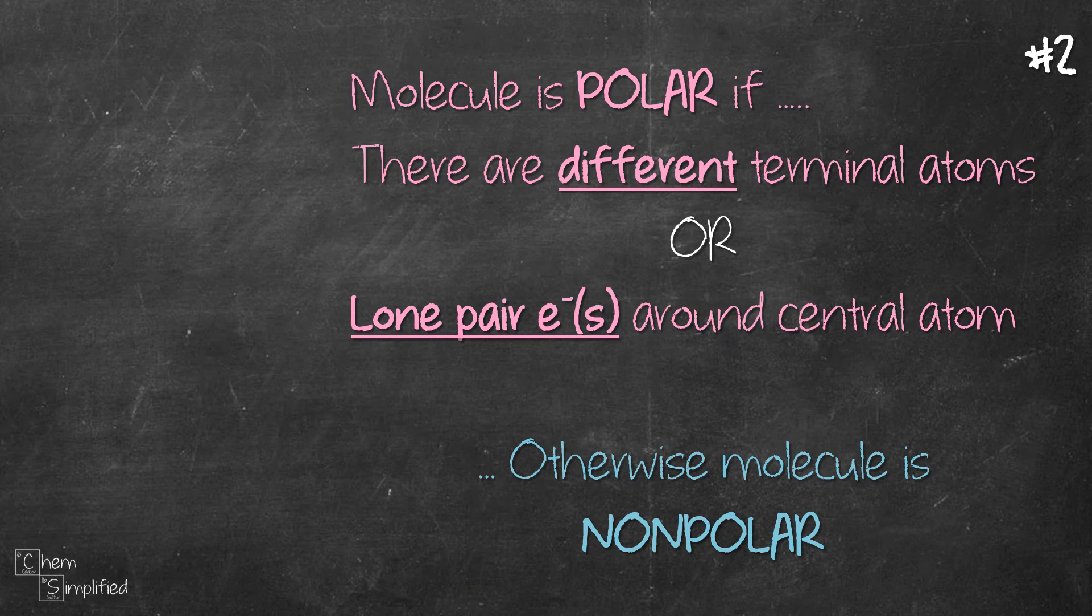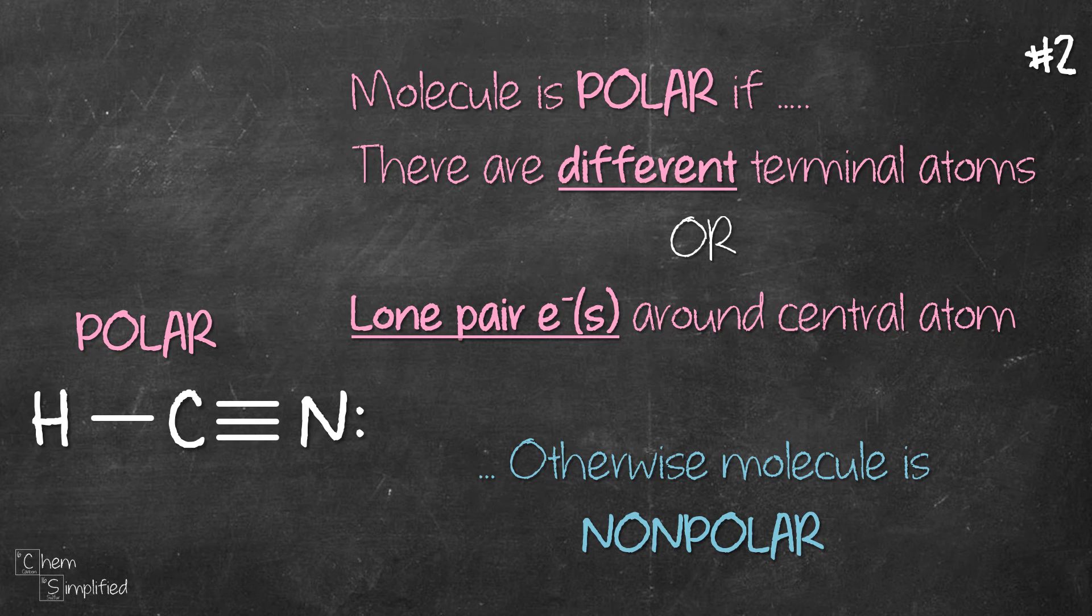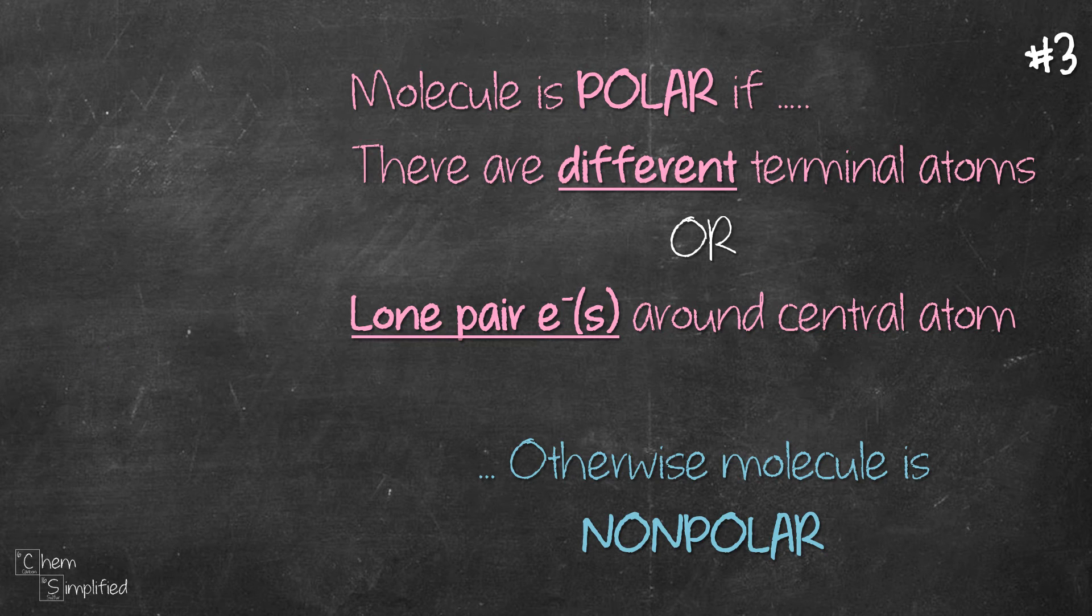Let's look at our second example, HCN. So, are there different terminal atoms in this molecule? Yup, we have hydrogen and nitrogen. These two are two different terminal atoms. And since this statement is true, therefore, HCN is a polar molecule.